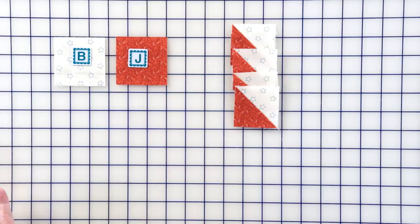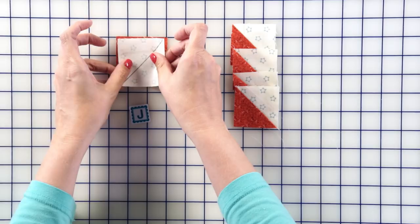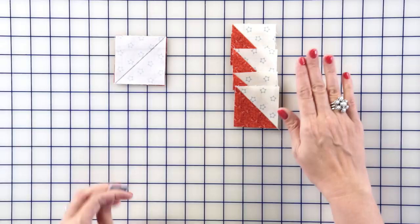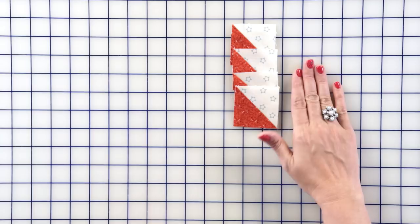Now we're going to make some more half square triangle units, and you're going to do the same thing we did on the very first step using your fabric B and J squares, putting them right sides together, stitching a quarter inch away from your center line, and you're going to make four center half square triangle units. You're going to have four per block, and then we're going to put these together.